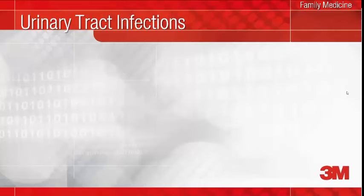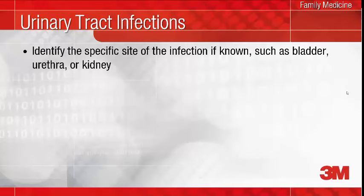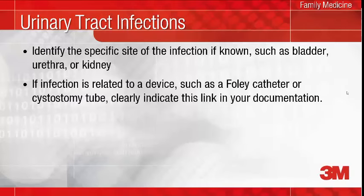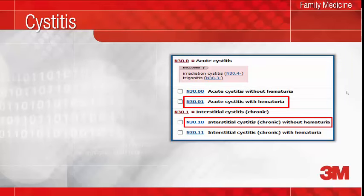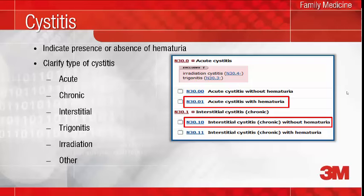There's not much new with urinary tract infections in ICD-10. If you know the site of the infection, it's important to note it, such as cystitis, urethritis, or pyelonephritis. If the infection is related to a device, you must document this relationship, such as UTI due to indwelling catheter. Lastly, if you know the organism causing the infection, make sure to document the cause and effect relationship in your notes, such as E. coli UTI. What's new with cystitis is that it is coded as either with or without hematuria. For example, code N30.01 is assigned when acute cystitis with hematuria is documented. You will also need to specify the type of cystitis, such as acute or interstitial. For example, N30.10 is assigned for chronic interstitial cystitis without hematuria. Lastly, indicate if there is any known or suspected organism causing the cystitis.